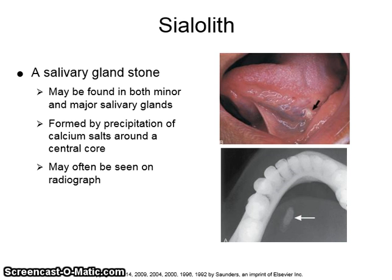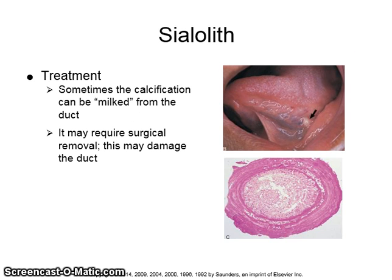A sialolith is a salivary gland stone that may be found in both minor and major salivary glands. It is formed by precipitation of calcium salts around a central core and may often be seen on a radiograph. Sometimes the calcification can be milked from the duct, or it may require surgical removal, which may damage the duct.